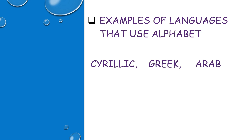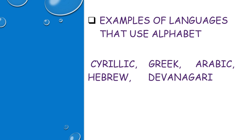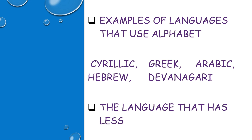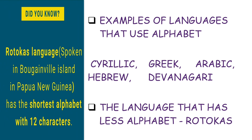The Cyrillic alphabet is used in Russian and Slavic languages. Next, the Greek alphabet, Arabic alphabet, Hebrew alphabet, and also the Devanagari alphabet. As many of us know, the Devanagari alphabet is used in Indian languages. And do you know which language has the smallest number of letters? It is Rotokas — it consists of only 12 letters and is spoken mainly in Bougainville Island in Papua New Guinea.